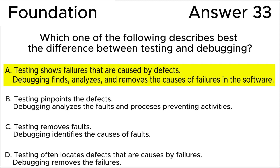Let's look at answer D. The answer is correct according to wording, but answer A is more complete and accurate — not only removing the failures. You may often find two similar answers in an exam question, one of which will be more complete and accurate.